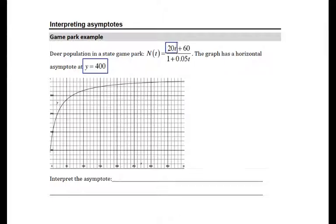We have a degree 1 polynomial in the numerator, a degree 1 polynomial in the denominator, and so I would take those leading terms, 20t over 0.05t. The t's drop out, and I end up with just the calculation 20 divided by 0.05, which is equal to 400.